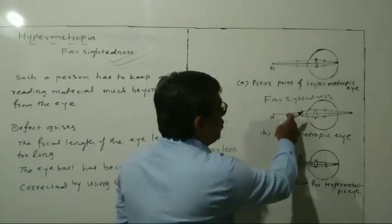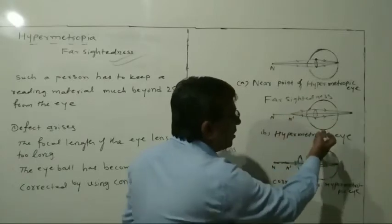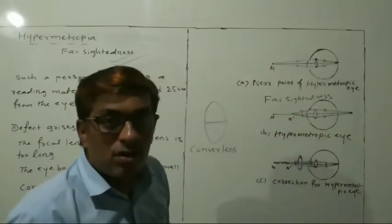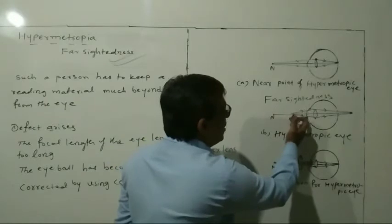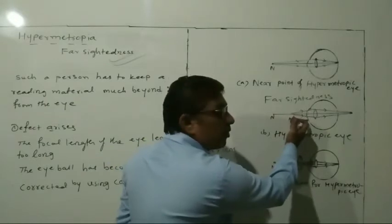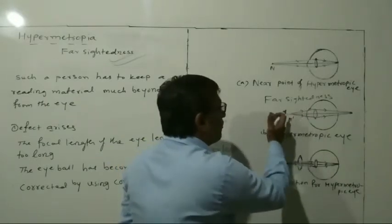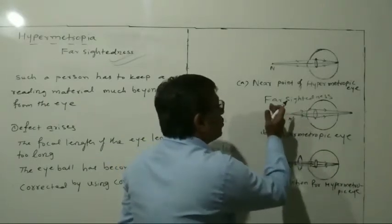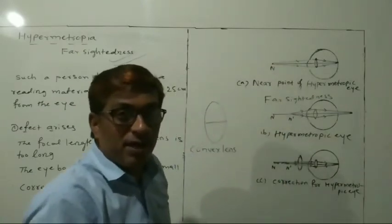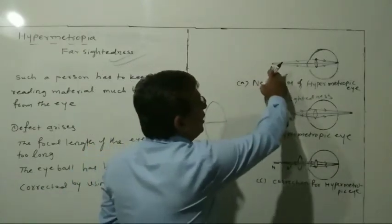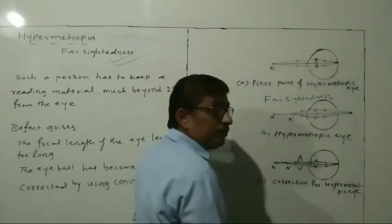Actually, the person has to look here, but he cannot see properly because his near point has become far. So only from a farther place, the image falls on the retina.